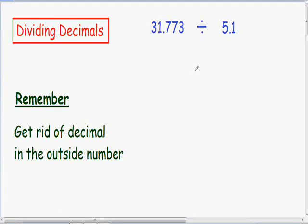So now we will be going over dividing decimals. Here we have 31.773 being divided by 5.1. So let's set this up using long division. We have 31.773 on the inside being divided by 5.1.